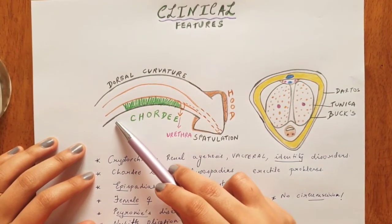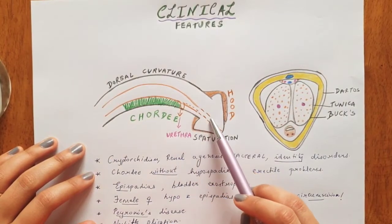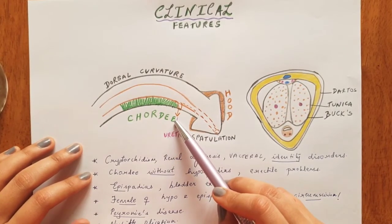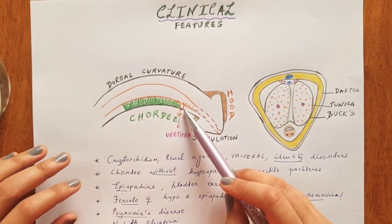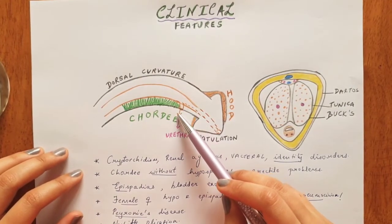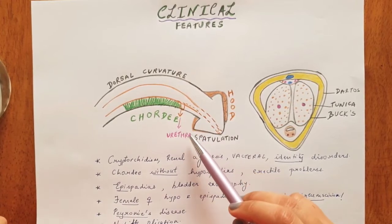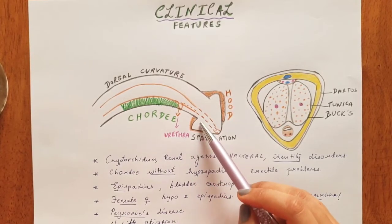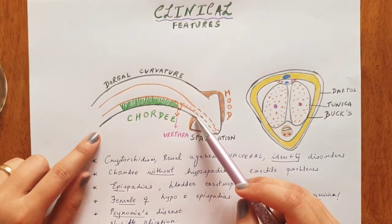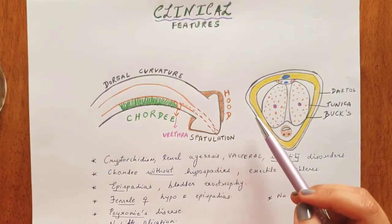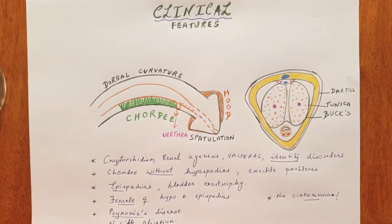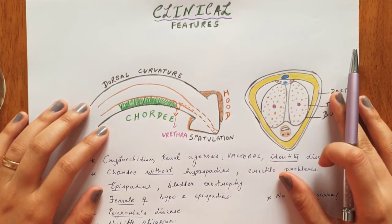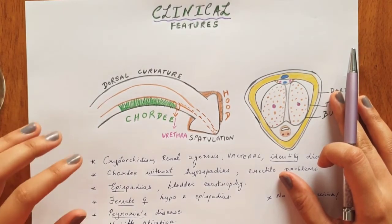Imagine that the urethral opening has to travel from the base till the tip of the glans during development, and there is something holding it back. These fibrotic strands restrict the urethra from going to the tip and cause this abnormal opening somewhere proximally. This is where the classification of hypospadias is based — the urethral opening can occur anywhere from the glandular/subcoronal to the perineal region. Chordee is of importance because it is commonly seen during erection; that is why the artificial erection test is also performed to see the extent of chordee.